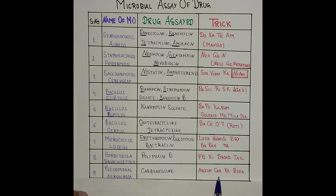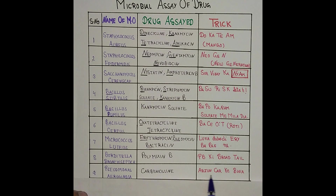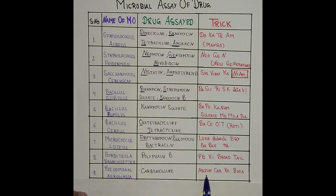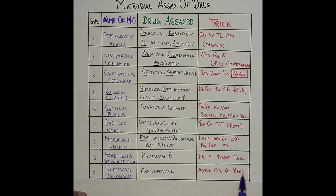The next one is Pseudomonas aeruginosa, and the drug is Carbenicillin. The trick is 'Arjun car ke bina': ARJUN for aeruginosa as the mnemonic, and CAR for Carbenicillin — 'Arjun car ke bina.'